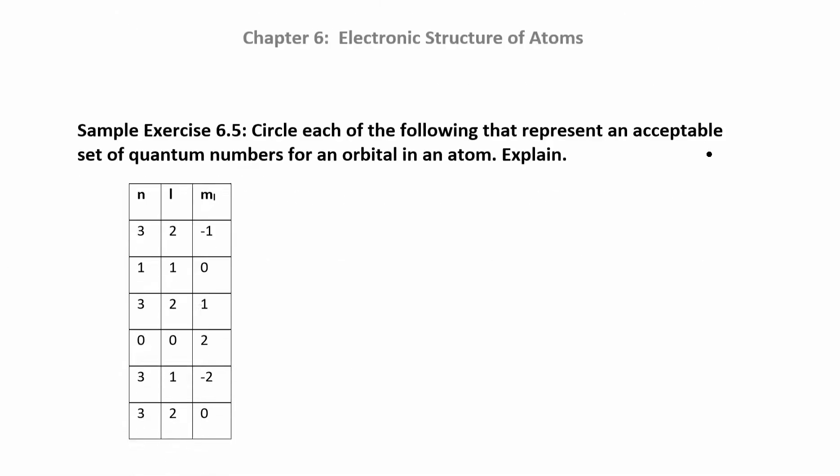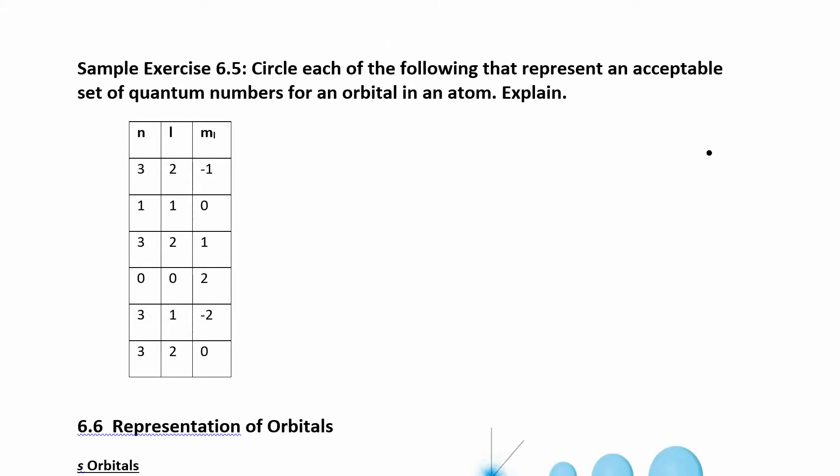Let's look at another one that's kind of common, and there's one of these on the homework. Circle each of the following that represent an acceptable set of quantum numbers. So some of these are not going to be acceptable. So there's some rules. What do we know about n? n, the only rule is it can't be 0.